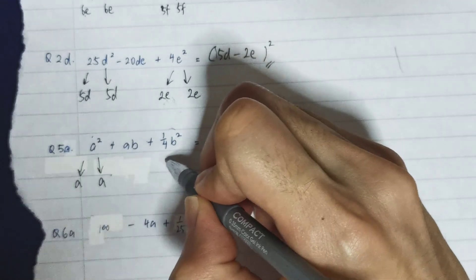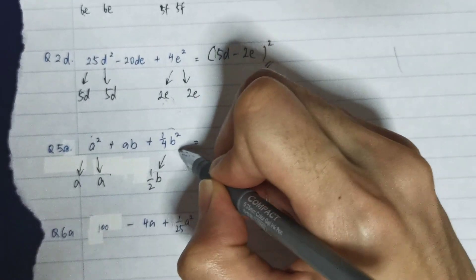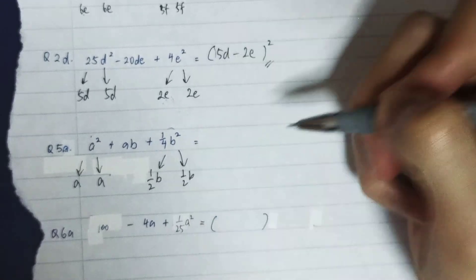And my b² will be b times b. Then after that, I need to check whether the middle term does it fit the 2ab, because it's a plus over here.